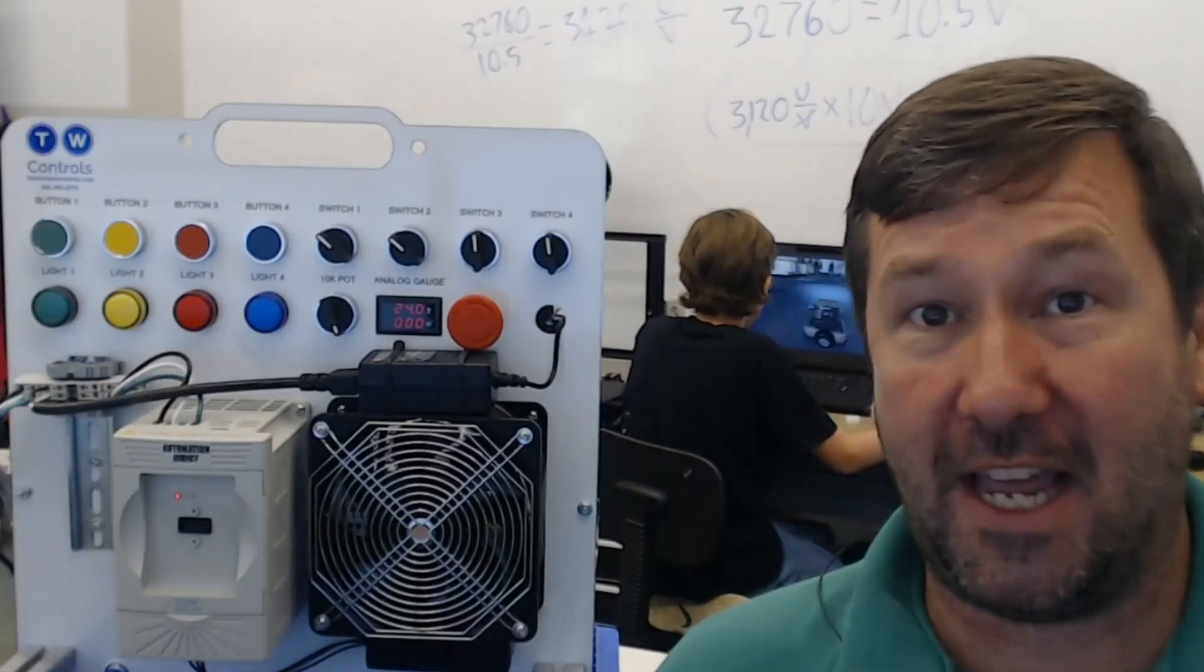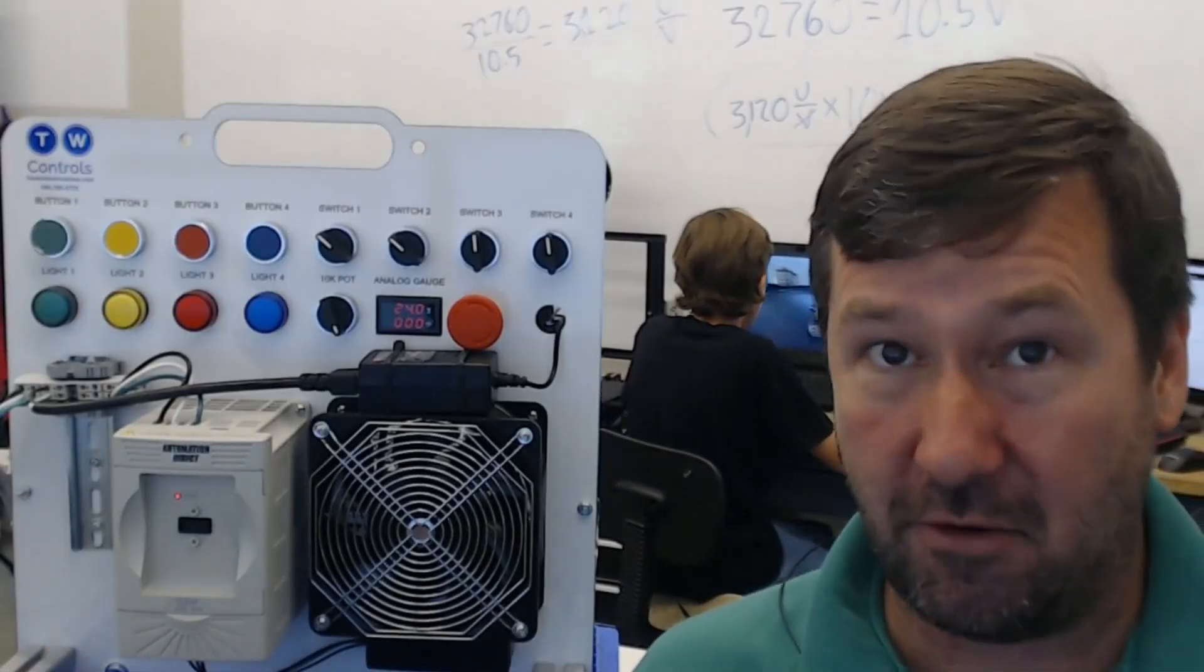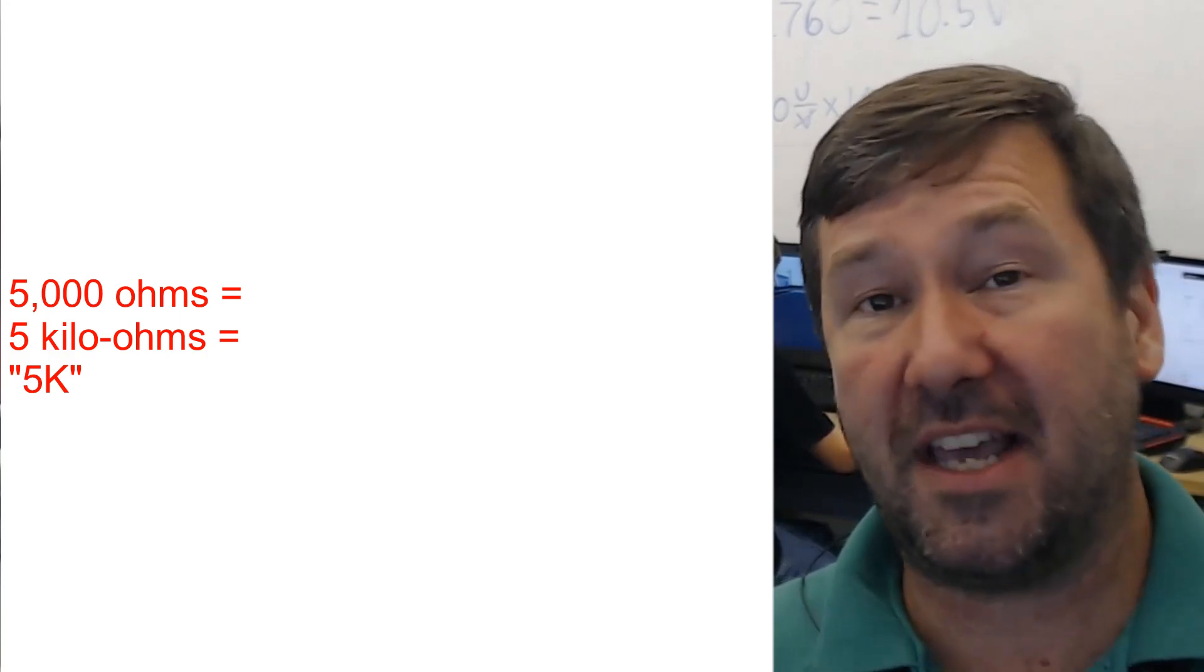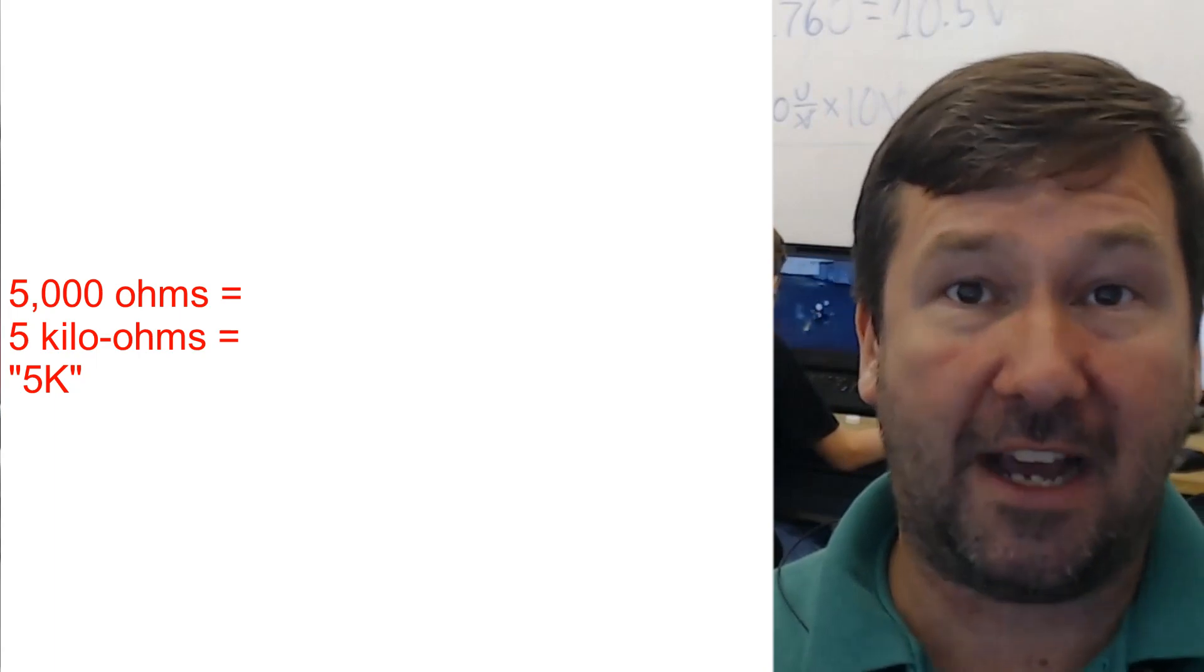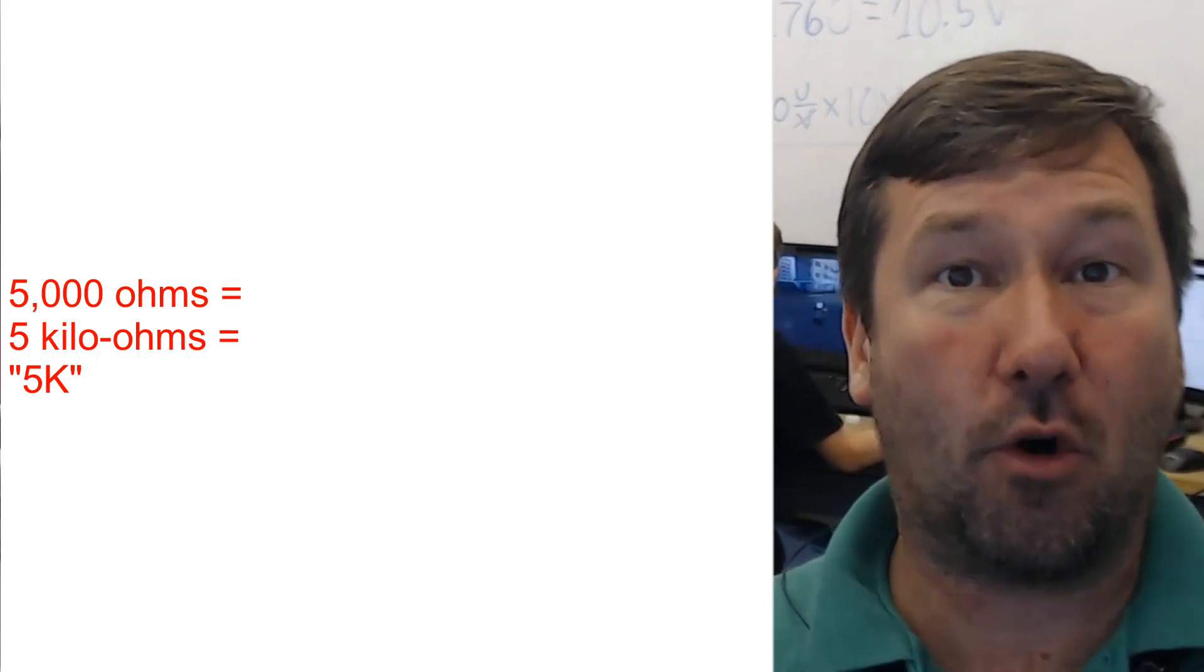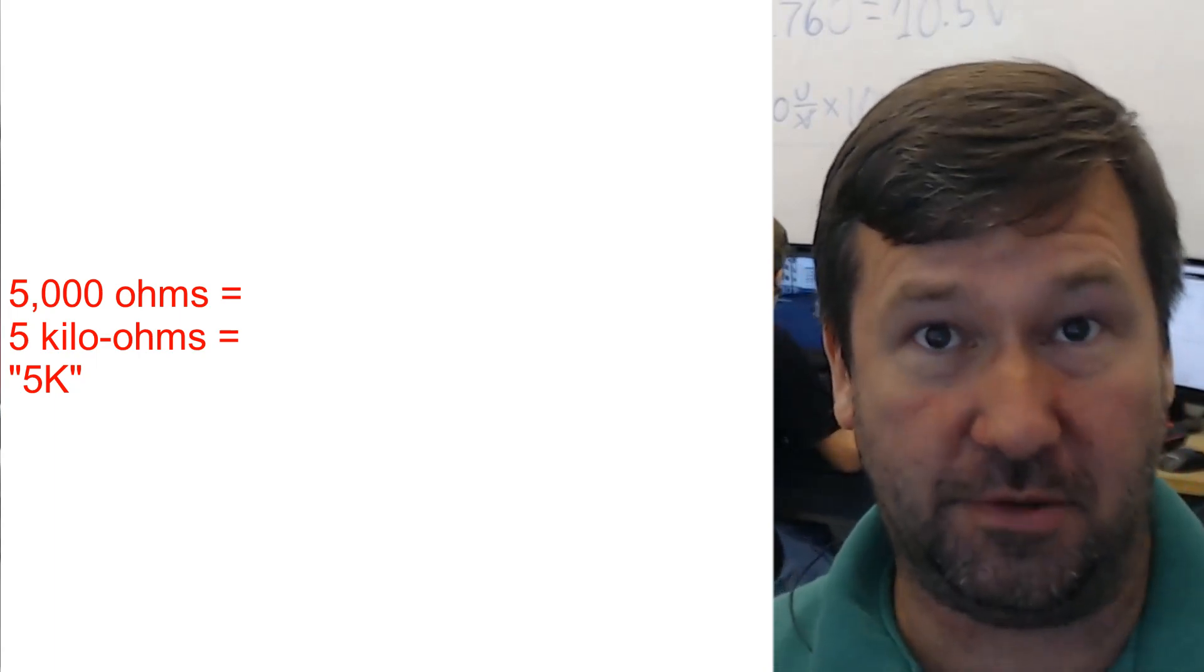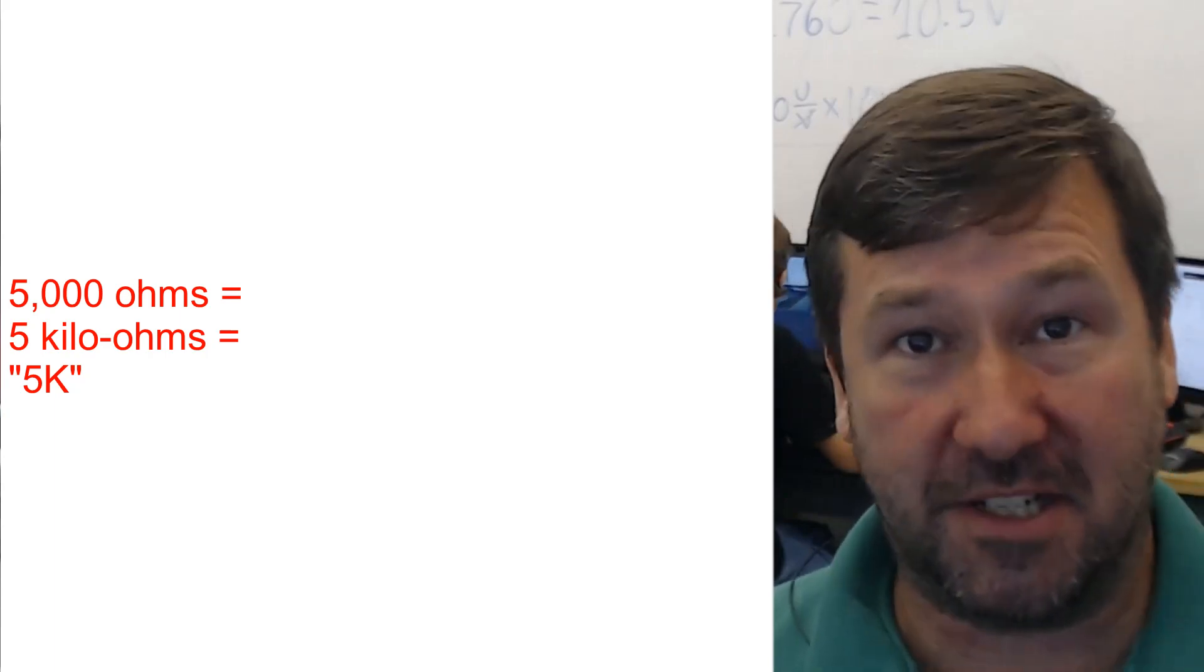Kind of throw that 5k, 7k number around thinking everybody knows it, but when we say a 5k potentiometer that means that it has 5,000 ohms of resistance or it has 5 kiloohms of resistance and we shorten it up into say 5k.